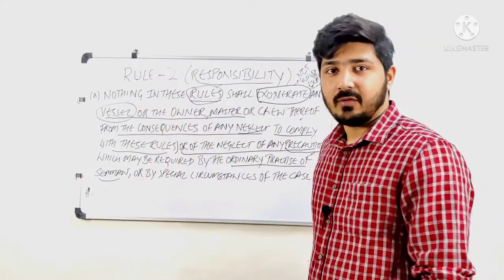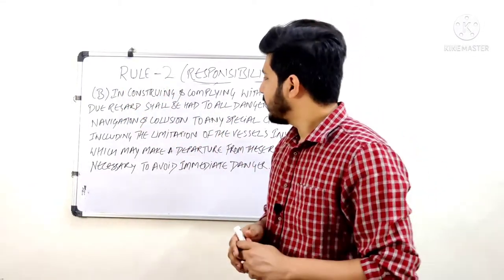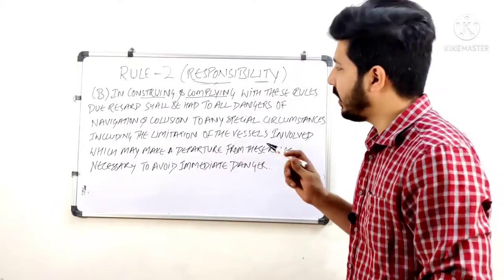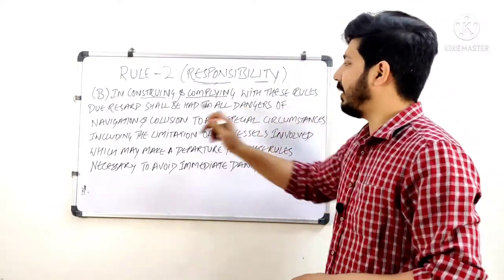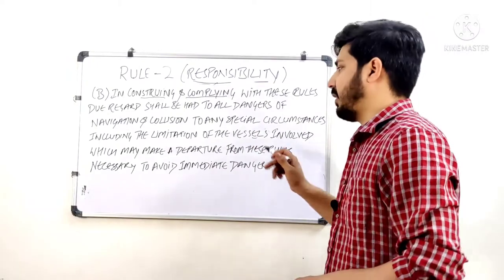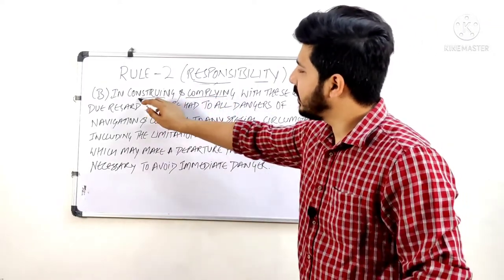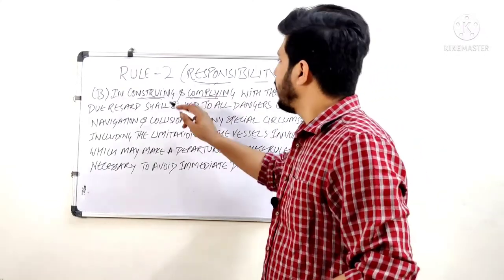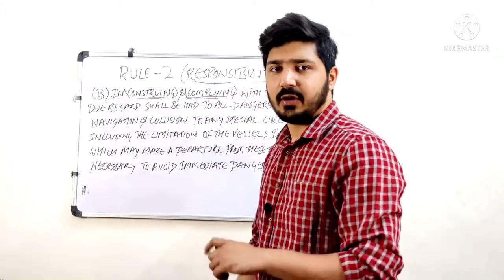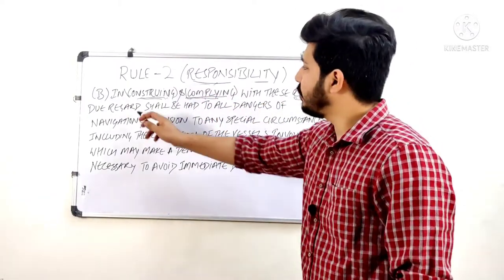Now I have written Part B and we will go through it word by word. 'In construing and complying with these rules, due regard shall be had to all dangers of navigation and collision, to any special circumstances including the limitation of the vessels involved.' Construing means understanding, complying means following. If you are understanding and following the rules of the ROR, you should also be careful about the dangers of navigation.